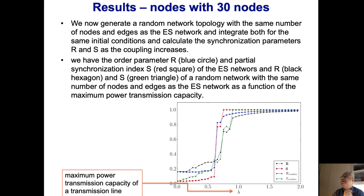Here you can see what happens for these two indexes for the ES methodology versus the random network. The ES method really favors synchronization. It synchronizes early with transmission lines with less capability, which means we don't need to spend a lot of money on transmission lines that support very high current. It's very efficient and supports network synchronization.